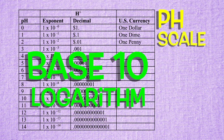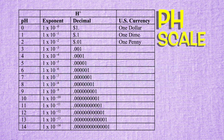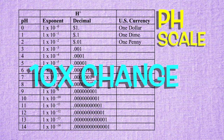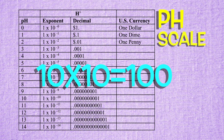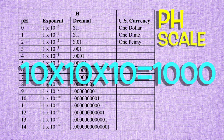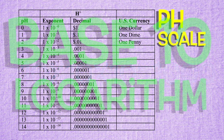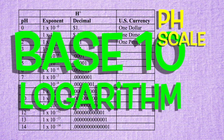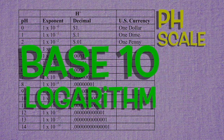Each full step in the pH scale represents a 10-fold change in pH. Two steps is 10 times 10, or 100. Three steps is 10 times 10 times 10, or 1,000. When we multiply by 10, we add a zero. That's a base 10 logarithm.